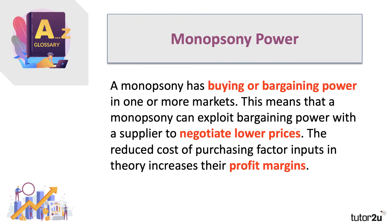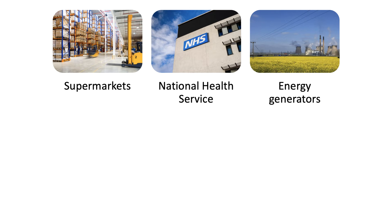Monopsony power can happen in both product markets — markets for goods and services — and also the labour market, but we have a separate video on monopsony in the labour market. We're going to be focusing on product markets in this short series. Some examples of businesses that have monopsony power include the supermarkets, especially the big ones like Tesco and Sainsbury's, and increasingly the deep discounters such as Aldi and Lidl, who have significant buying power when sourcing food, drink, and other products for sale in the aisles.